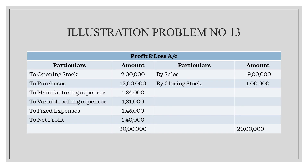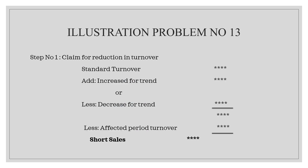This is another part of the question — it will cover the trading account and profit and loss account all together, giving net profit. In case we want to find the gross profit ratio, we can use this net profit. As mentioned, this is the reduction in turnover — short sales.